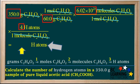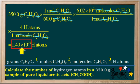So we take 350.0, divide by 60, multiply by 6.02 times 10 to the 23rd, and multiply by 4. The answer is 1.40 times 10 to the 25th. So the final answer to the problem is that in a 350 gram sample of pure acetic acid, there are 1.4 times 10 to the 25th H atoms.